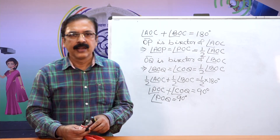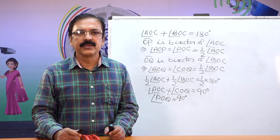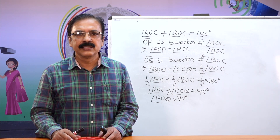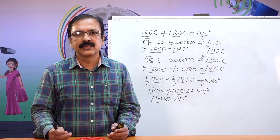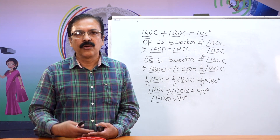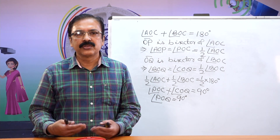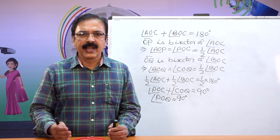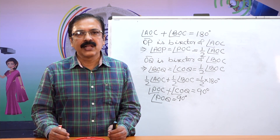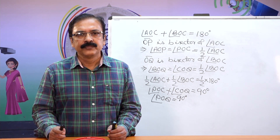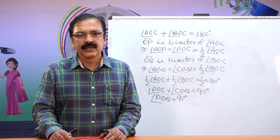Dear students, today we discussed various definitions of straight lines and angles, different types of angles, and pairs of angles like adjacent angles, complementary angles, and supplementary angles. We also learnt that when a ray stands on a straight line, the angles so formed are a linear pair. This is the end of the lesson today. Thank you.